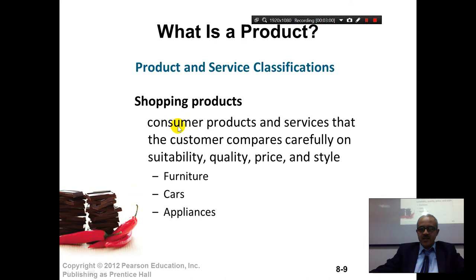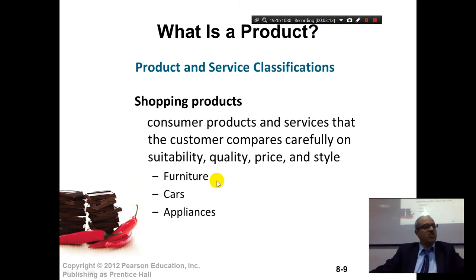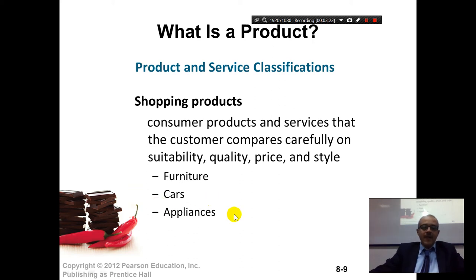Shopping products are consumer products and services that the customer compares carefully on suitability, quality, price, and style. We said furniture — you check one furniture place, then another. When you buy a car, you don't just buy it: you see this one, check that one, try that one, talk to your friends, bring your wife, call your kids. Appliances — same thing.